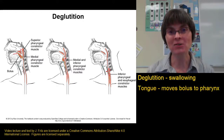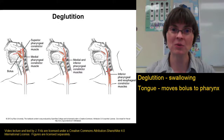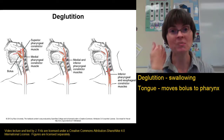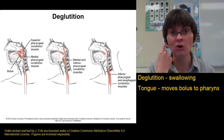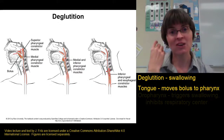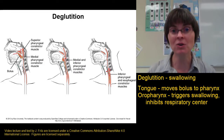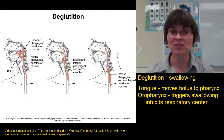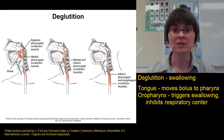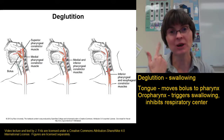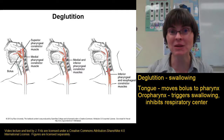The voluntary part of swallowing begins with the tongue pushing the bolus to the back of the throat — the oropharynx. Receptors in the oropharynx detect the bolus and trigger two things: the involuntary steps of swallowing, and a signal to the respiratory center of the brain that inhibits breathing. This is important so you don't aspirate food into your lungs.